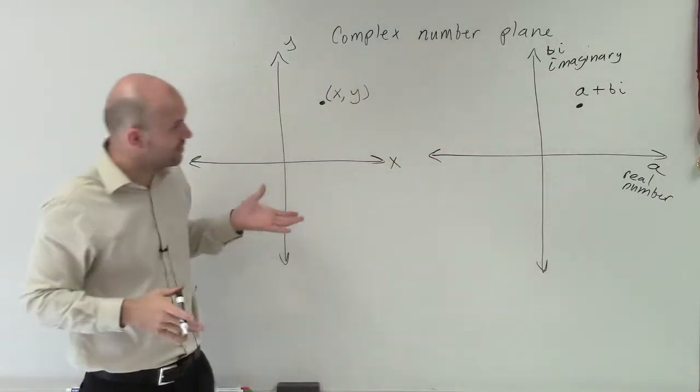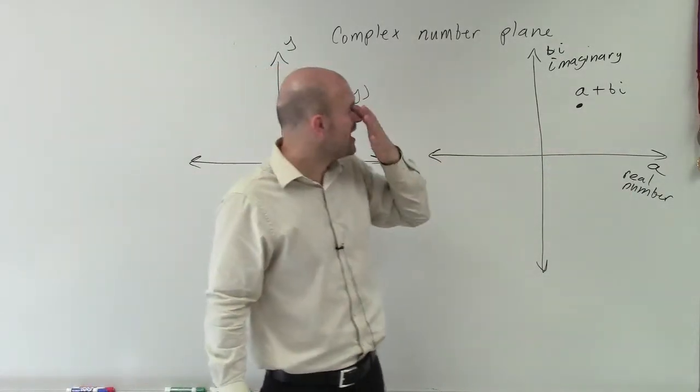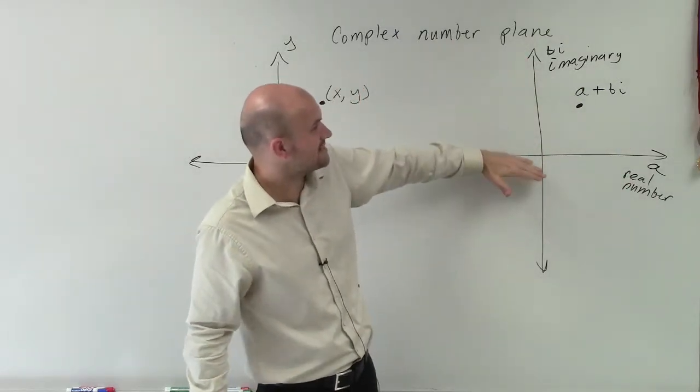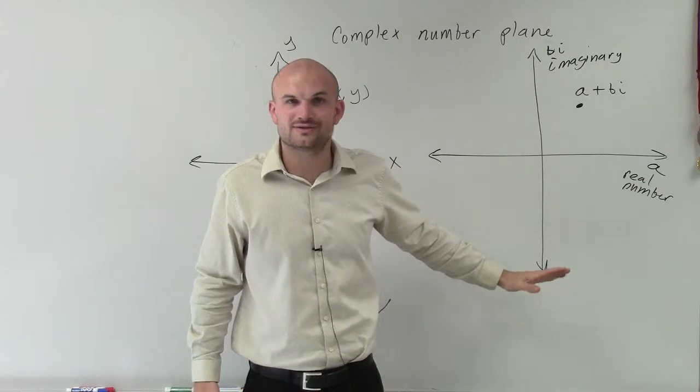Now, just like our Cartesian coordinates, if a is negative, we're going to go to the left. And if a is positive, we go to the right. If bi is positive, we go up. And if bi is negative, we're going to go down.